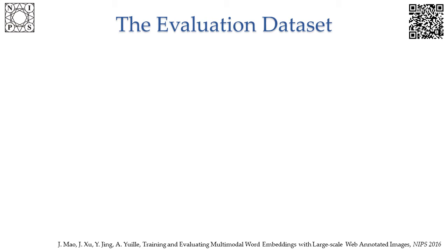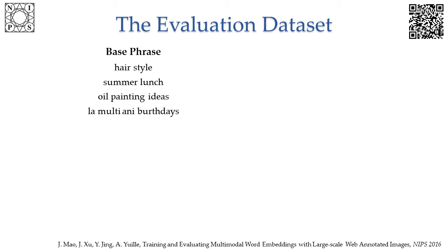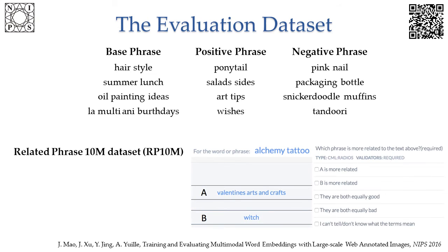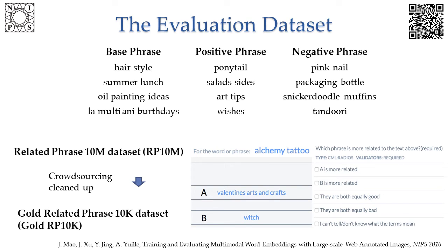We also construct evaluation datasets to directly assess the effectiveness of word embeddings in terms of finding thematically similar or related words and phrases. The dataset is collected from click data with millions of users in an image search system. It consists of triplets with a base phrase, a positive phrase, and a negative phrase, where the base phrase is thematically more related to the positive phrase than the negative phrase. Because the user click data contain noises, we conduct a crowdsourcing cleanup step to get a gold standard evaluation dataset.